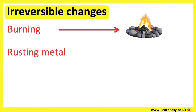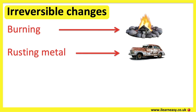Rusting metal: when a metal is exposed to oxygen and water for long enough, a reaction called oxidization occurs. This causes the metal to rust.